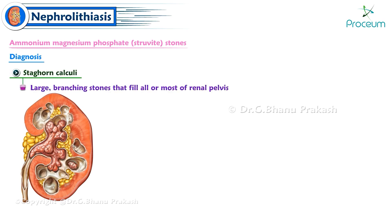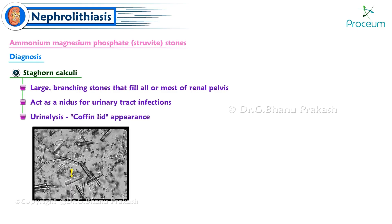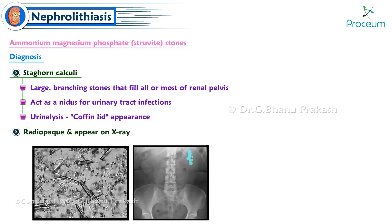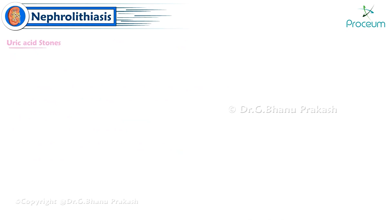Ammonium magnesium phosphate stones can form staghorn calculi — large branching stones that fill all or most of the renal pelvis. Staghorn calculi can act as a nidus for urinary tract infections. Crystals with a coffin lid appearance on urinalysis are classically seen in these patients. Staghorn calculi are radiopaque on X-ray. Treatment involves antibiotics directed against the underlying pathogen and surgical removal of the stone.